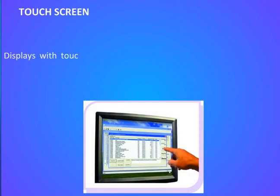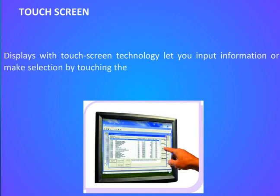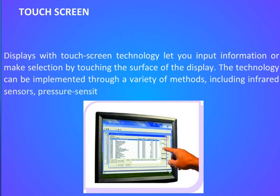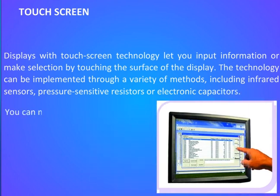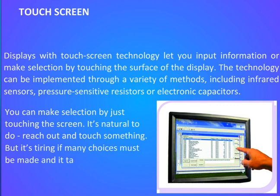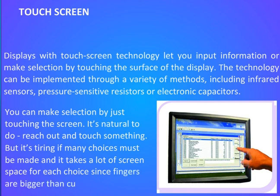Touchscreen — displays with touchscreen technology let you input information or make selections by touching the surface of the display. The technology can be implemented through a variety of methods including infrared sensors, pressure-sensitive resistors, or electronic capacitors. You can make selections by just touching the screen. It is natural to reach out and touch something, but it is tiring if many choices must be made, and it takes a lot of screen space for each choice since fingers are bigger than cursors.